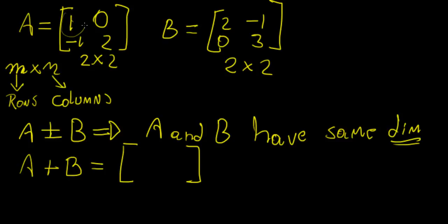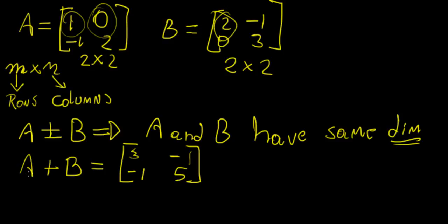What we're going to do is add each of the respective components together. So that's 1 plus 2, that's 3. Then 0 plus minus 1, that's minus 1. Then minus 1 plus 0, that's minus 1. And 2 plus 3, that's 5. So that's our result.